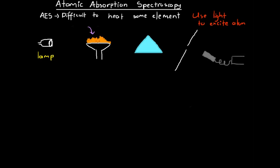The sample gets vaporized in the flame. Light from the lamp passes through this vaporized metal, and certain frequencies of light from the lamp are absorbed by the vaporized atoms as they become excited. As a result, not all frequencies of light make it through the flame. We then measure and analyze the light leaving the atomic vapor using a monochromator.